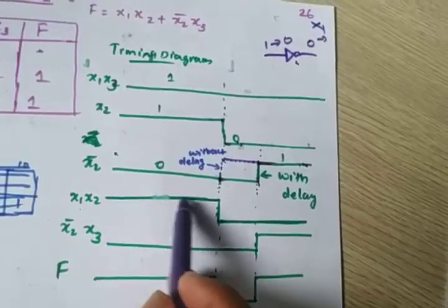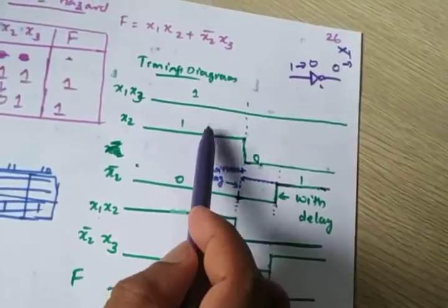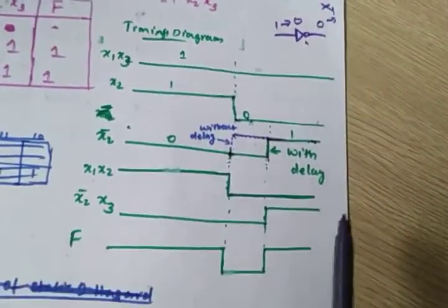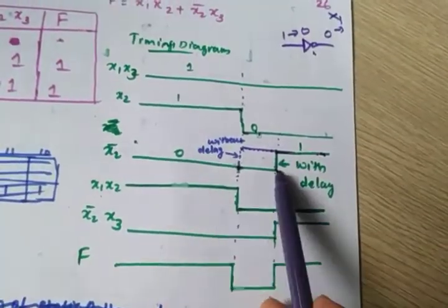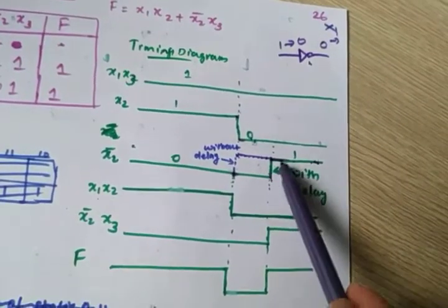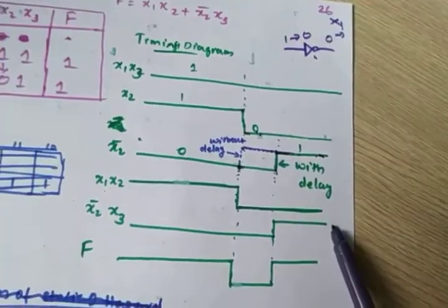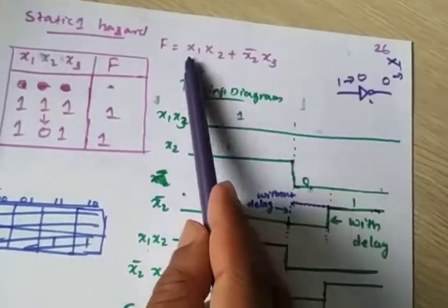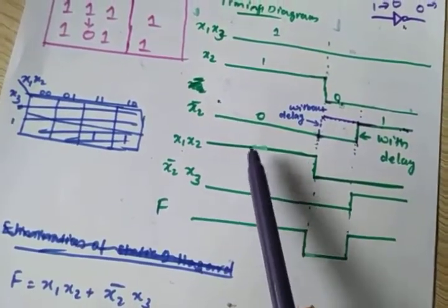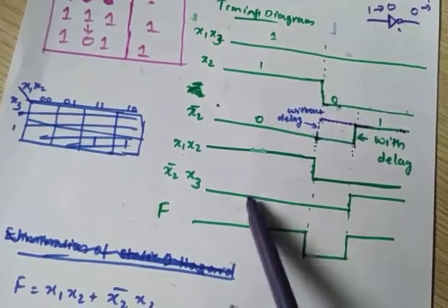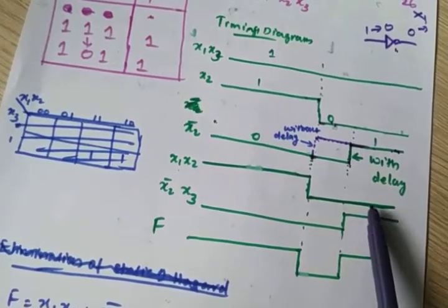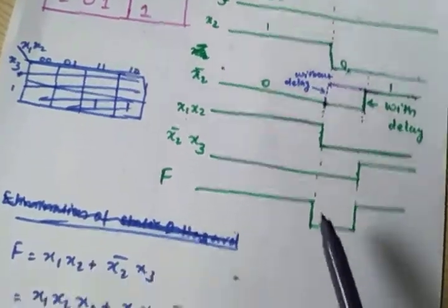So this is X1·X2 graph. X1 is 1, X2 changes from 1 to 0, so X1·X2 goes to 0. X2-bar — till here it is 0, but after the transition here it becomes 1. X2-bar·X3 — since X3 is always 1 and X2-bar transitions to 1, the output of X2-bar·X3 is 1. The overall output F remains 1 throughout the transition.